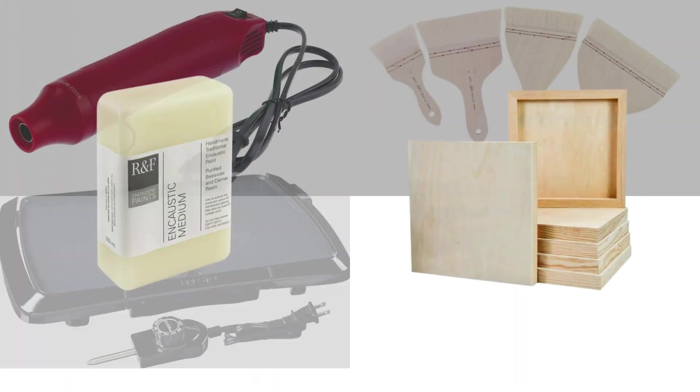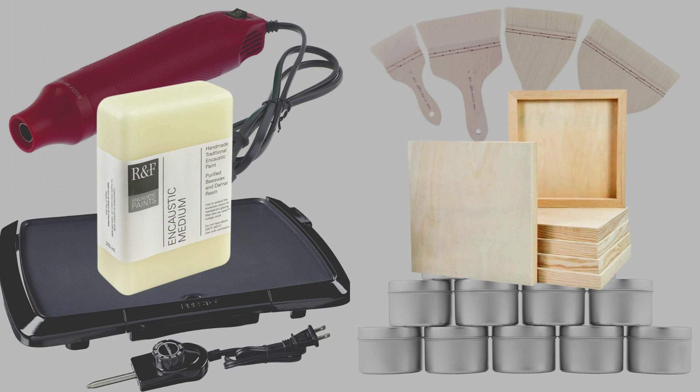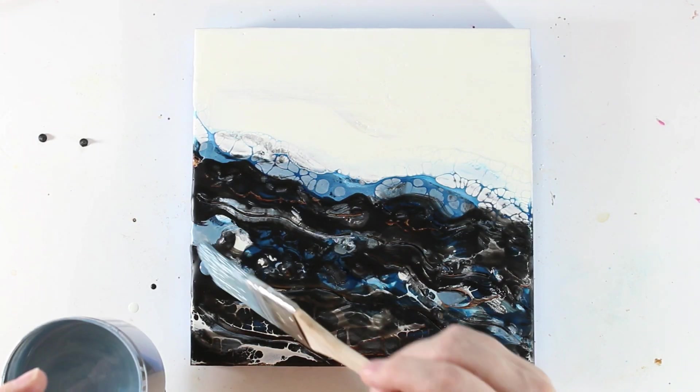And that's it. These six things—griddle, metal containers, heat gun, brushes, wood board, and encaustic medium—are all you need to start learning encaustic painting techniques. There are links to everything I've mentioned in the description.